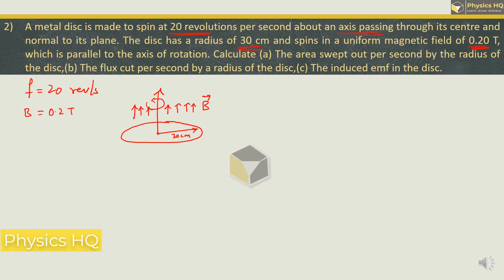Calculate the area swept out per second by the radius of the disc. With reference to this radius that we have drawn over here, the complete area of the disc is swept by it. Now they are asking area swept per second. So we know that per second disc is going around 20 times. So the total area that it will sweep is equal to area swept in one revolution multiplied by number of revolutions which is 20.